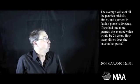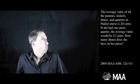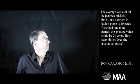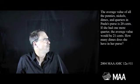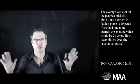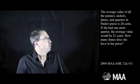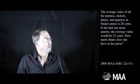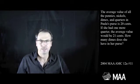The average value of all the pennies, nickels, dimes and quarters in Paula's purse is 20 cents. That's right. So a whole bunch of pennies, nickels, dimes and quarters and the average value is 20. If she had one more quarter, the average value would be 21 cents. That's interesting. How many dimes does she have in her purse?